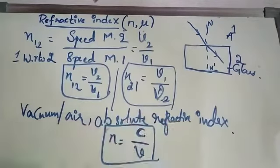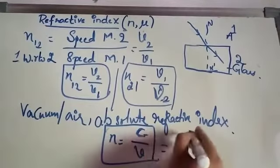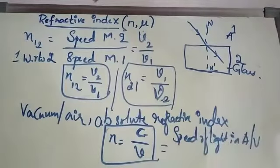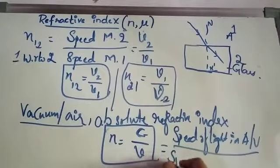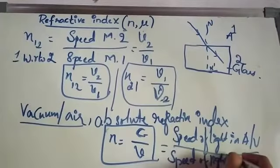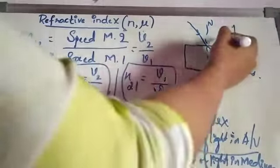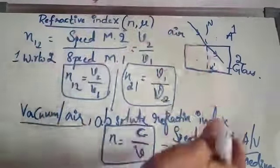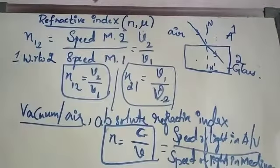In general, the absolute refractive index is simply N equals C by V. This is the formula we use when solving problems. C is the speed of light in air or vacuum, and V is the speed of light in a medium — whether glass, diamond, or any other medium. For example, with air on one side and glass on the other, N equals C by V gives the absolute refractive index.